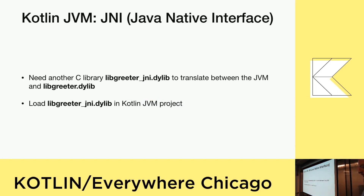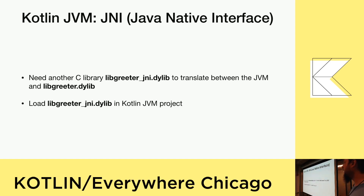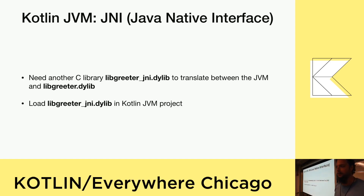Now let's talk about JVM. JVM is a little bit of a different story. We have our original libgreeter.dylib shared library that we created in C. When we go to the JVM though, we actually have to create an additional shared library in C to translate between the JVM and the original shared library. We don't have nice tools like cinterop to do this for us on JVM like we have in Kotlin native, so we have to build some of this stuff out ourselves. It's a little bit extra work, but it's not too bad.